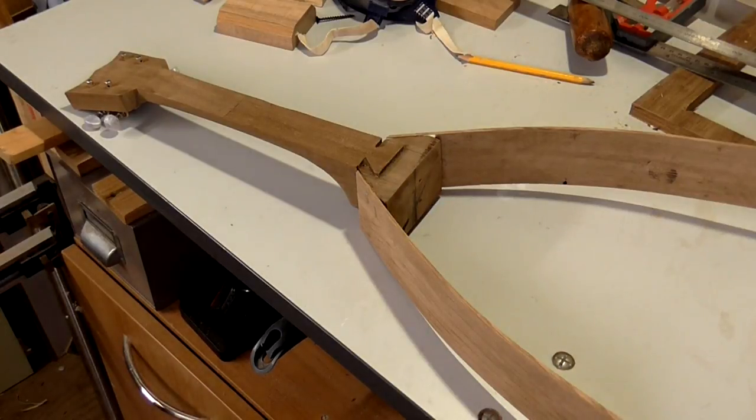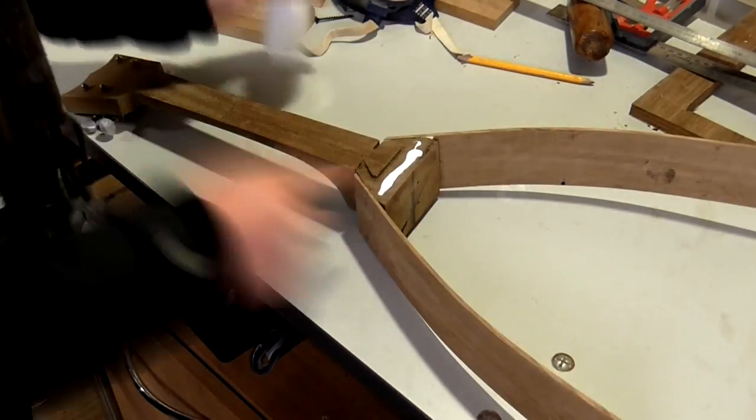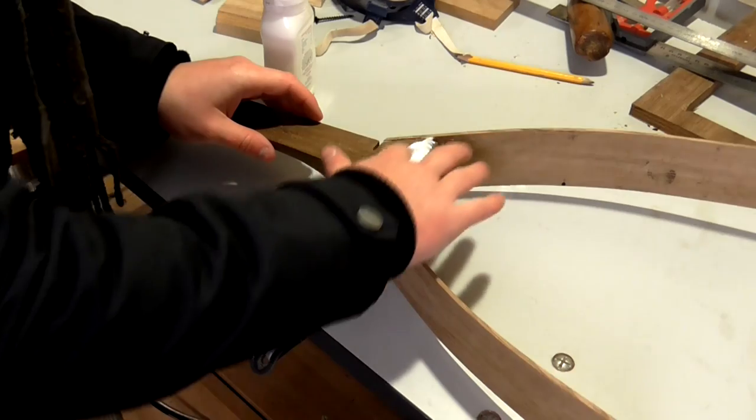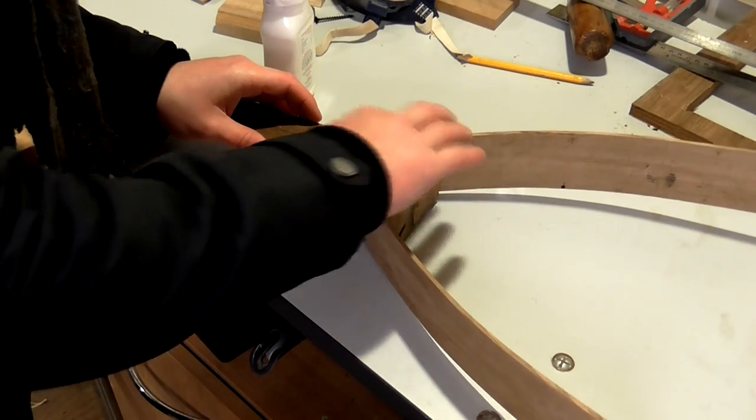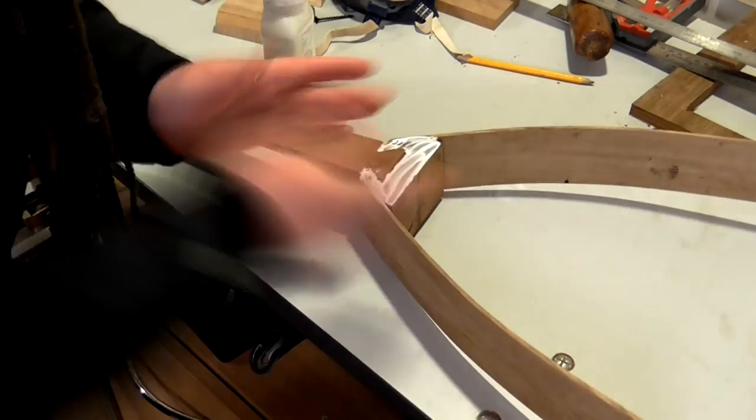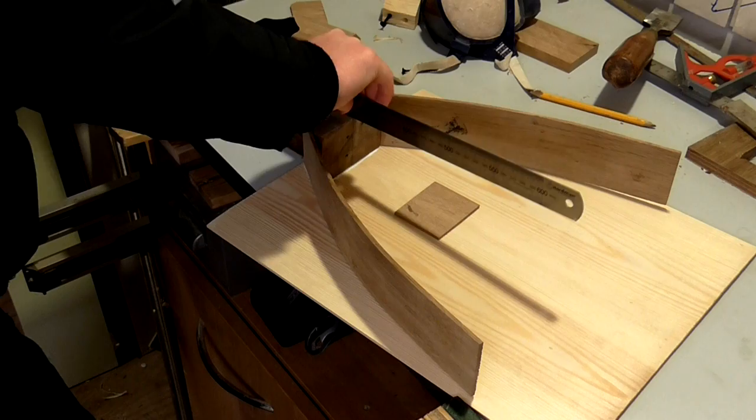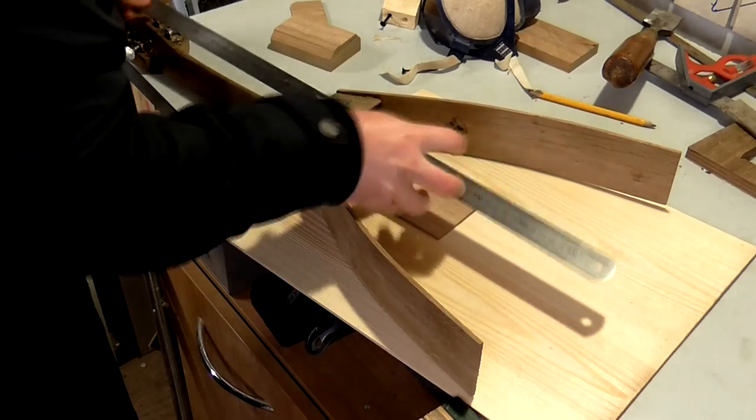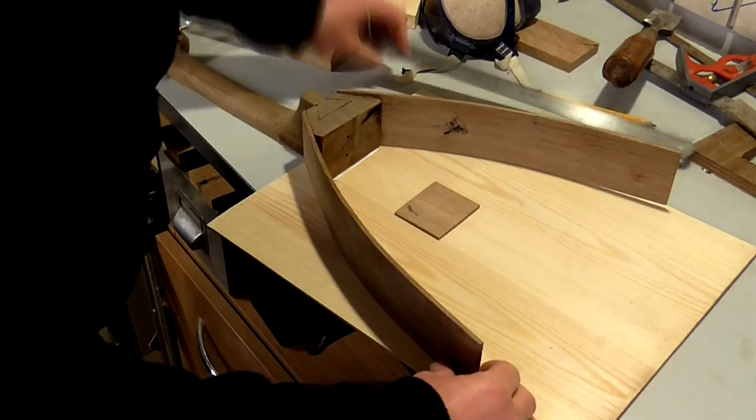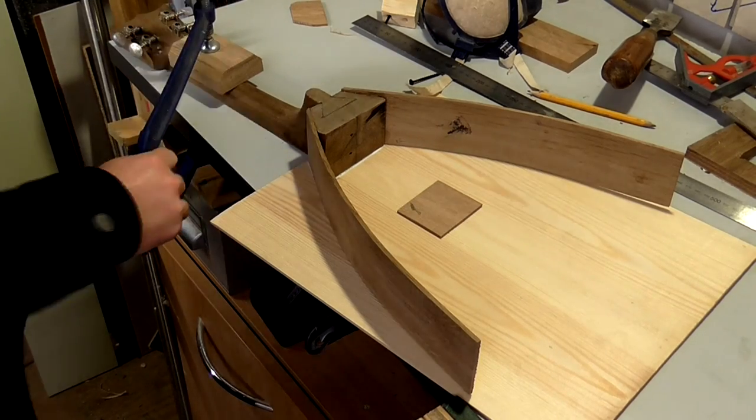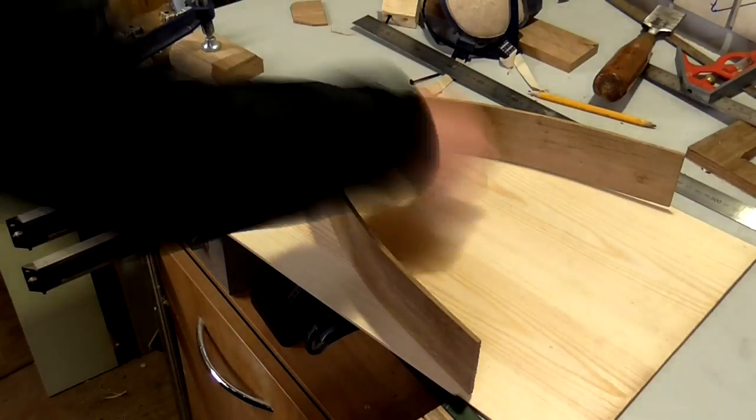Then it was time to attach the soundboard to the neck block, so I applied glue and then placed it with the front of the soundboard facing down onto the worktop, again to keep everything flush with the neck. I used a ruler again to make sure that the centre of the soundboard was as parallel to the neck as possible. I clamped down the neck again and the neck block too.